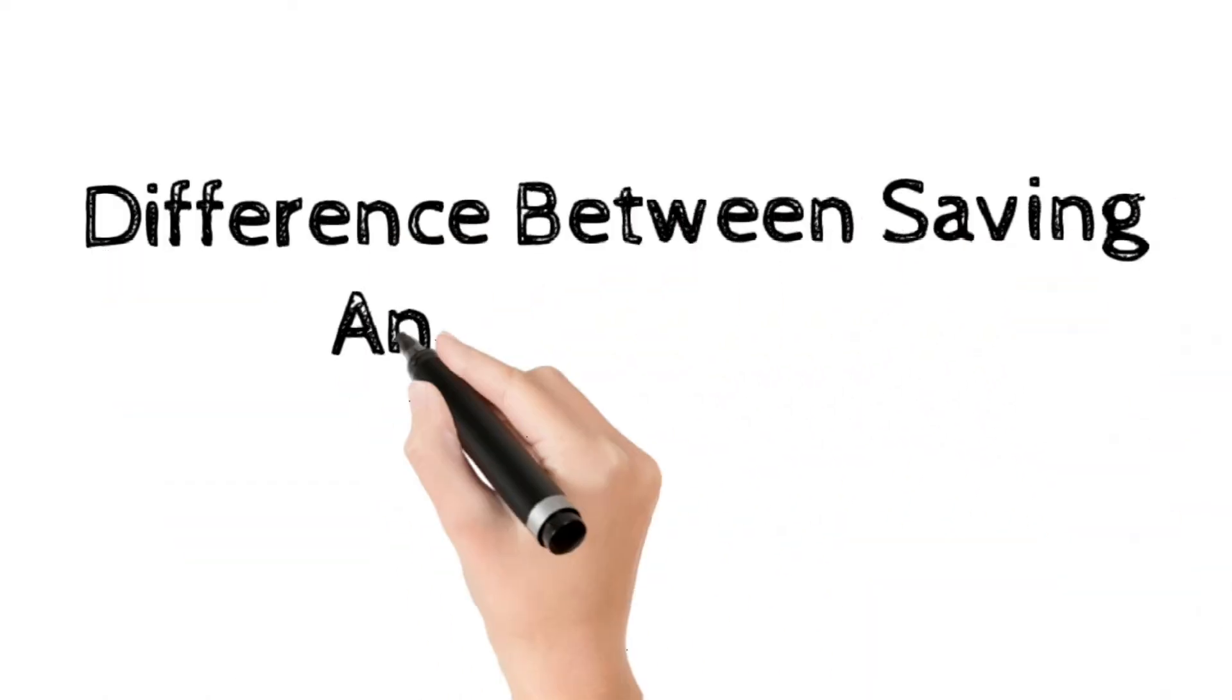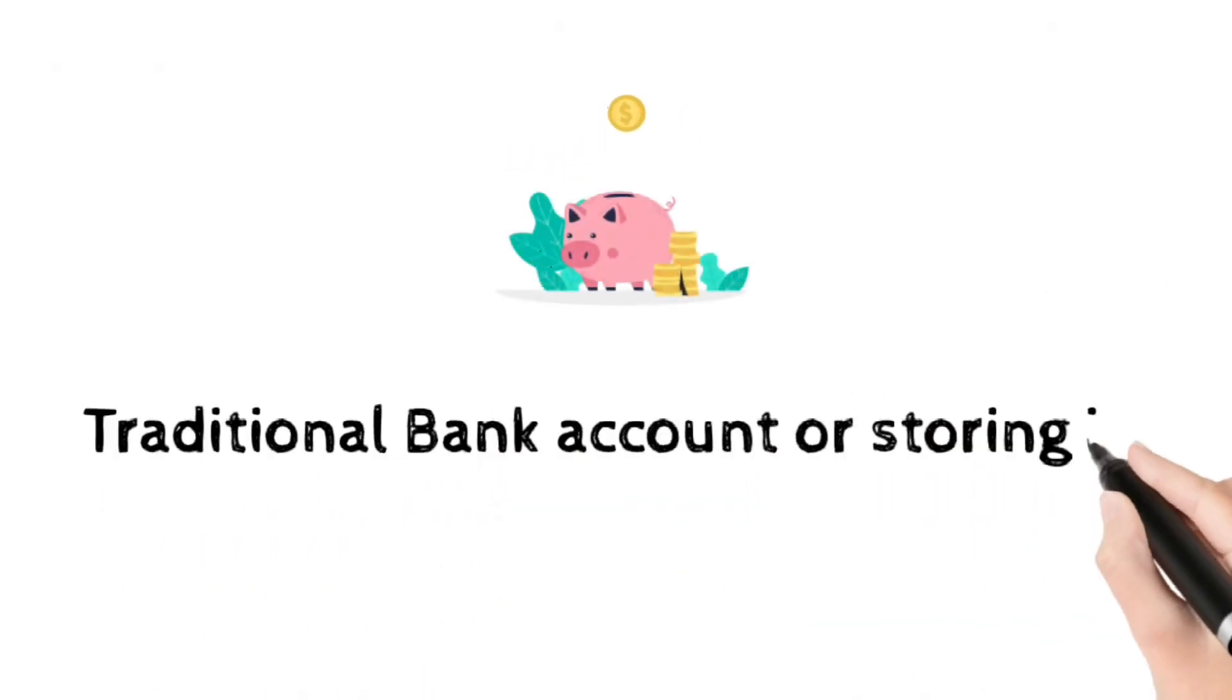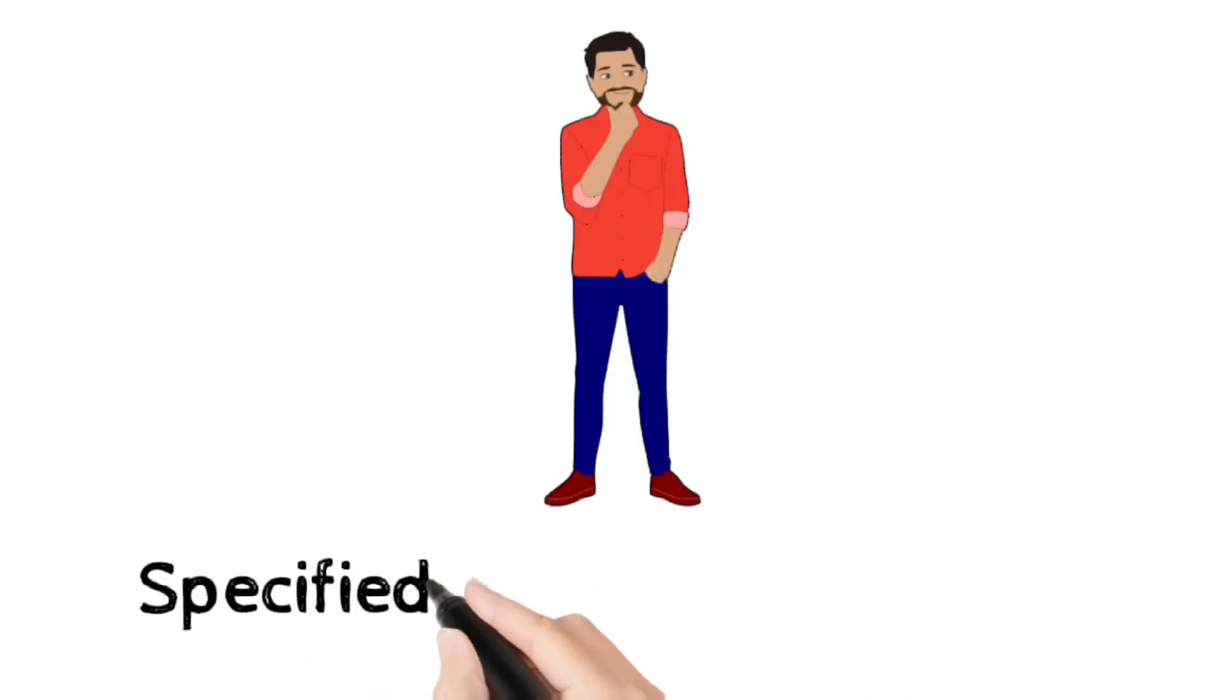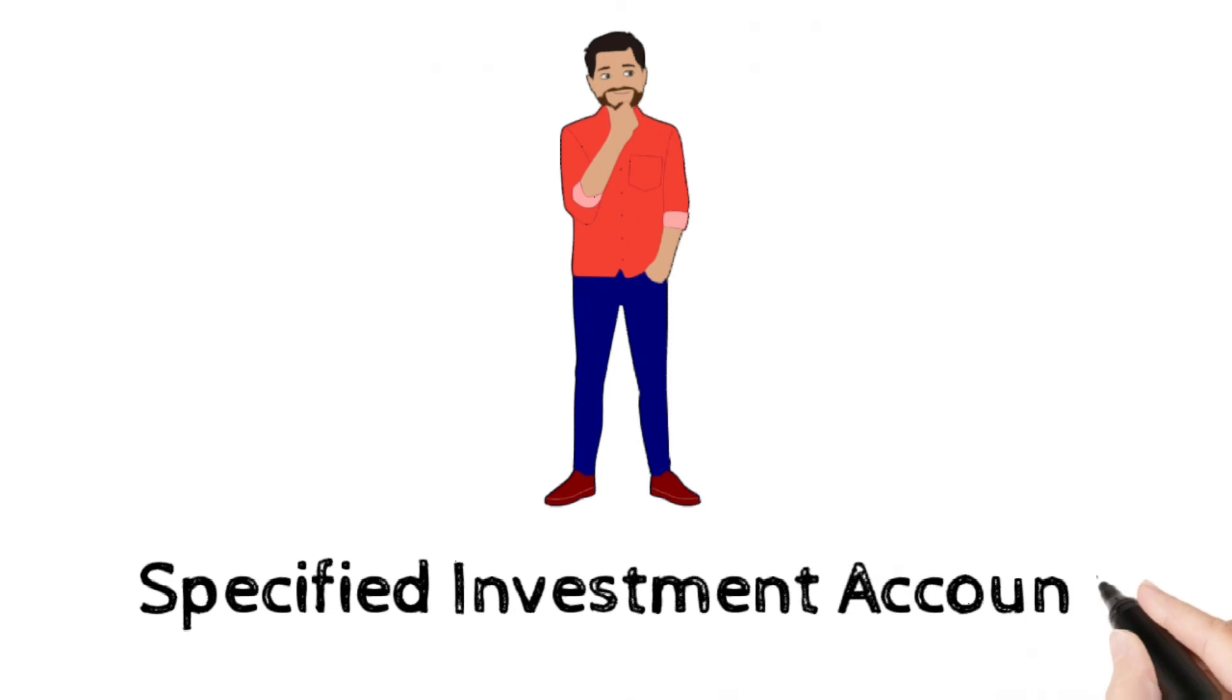Difference between saving and investing. You typically save money in a traditional bank account or by simply storing it someplace safe. When you invest, you are purchasing products and keeping your money in a specified investment account.